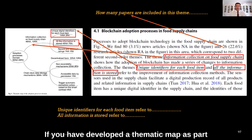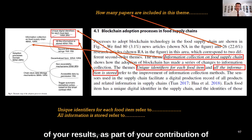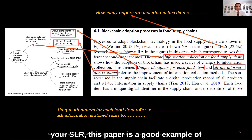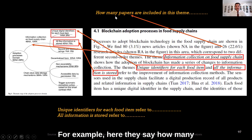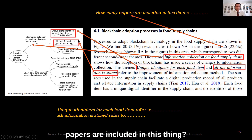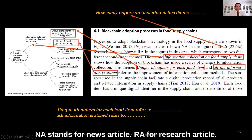If you have developed a thematic map as part of your results in your SLR, this paper is a good example of how thematic maps can be described. For example, here they say how many papers are included. You can see 14 news articles and 3 research articles — NA stands for news article, RA for research article.